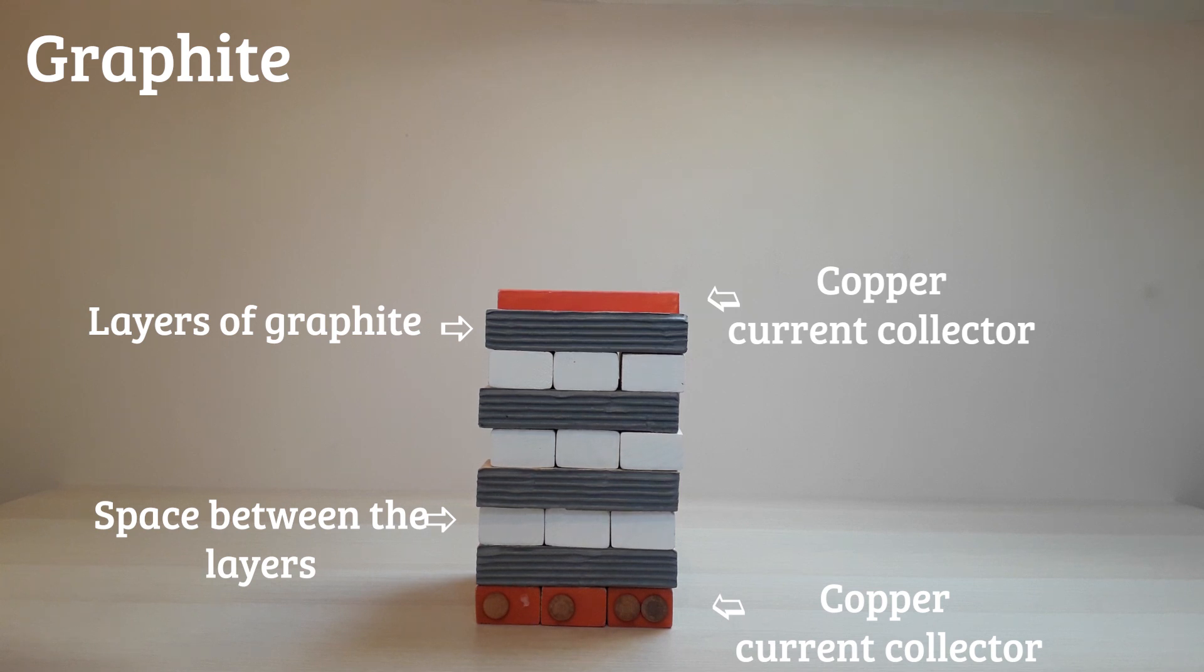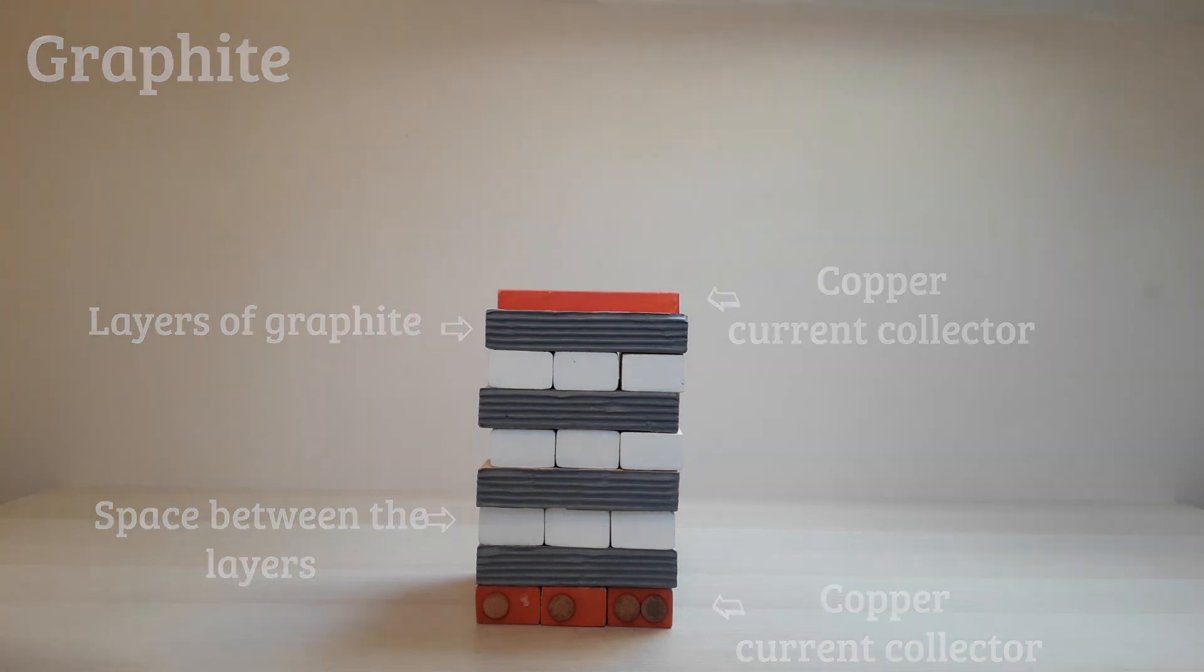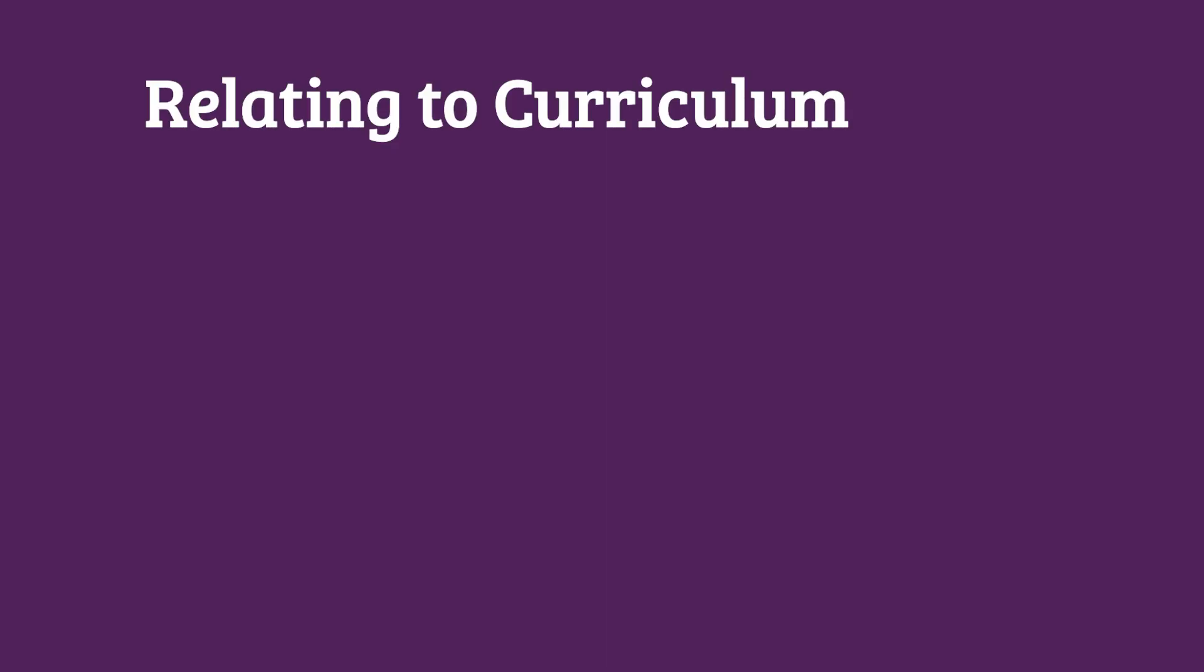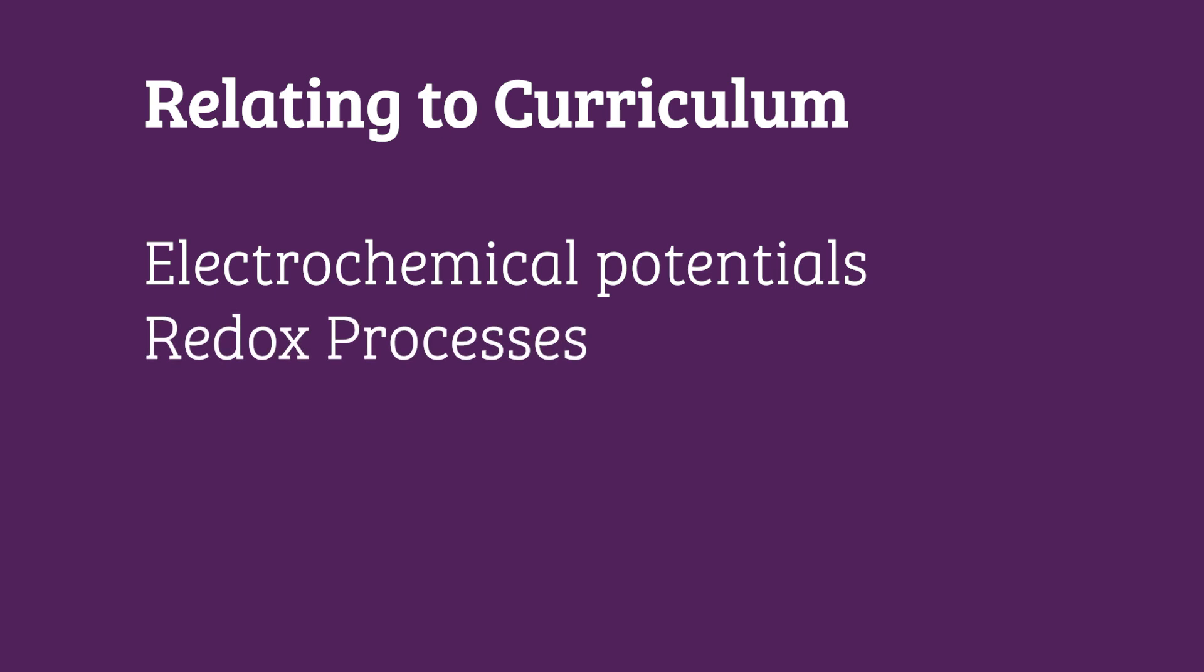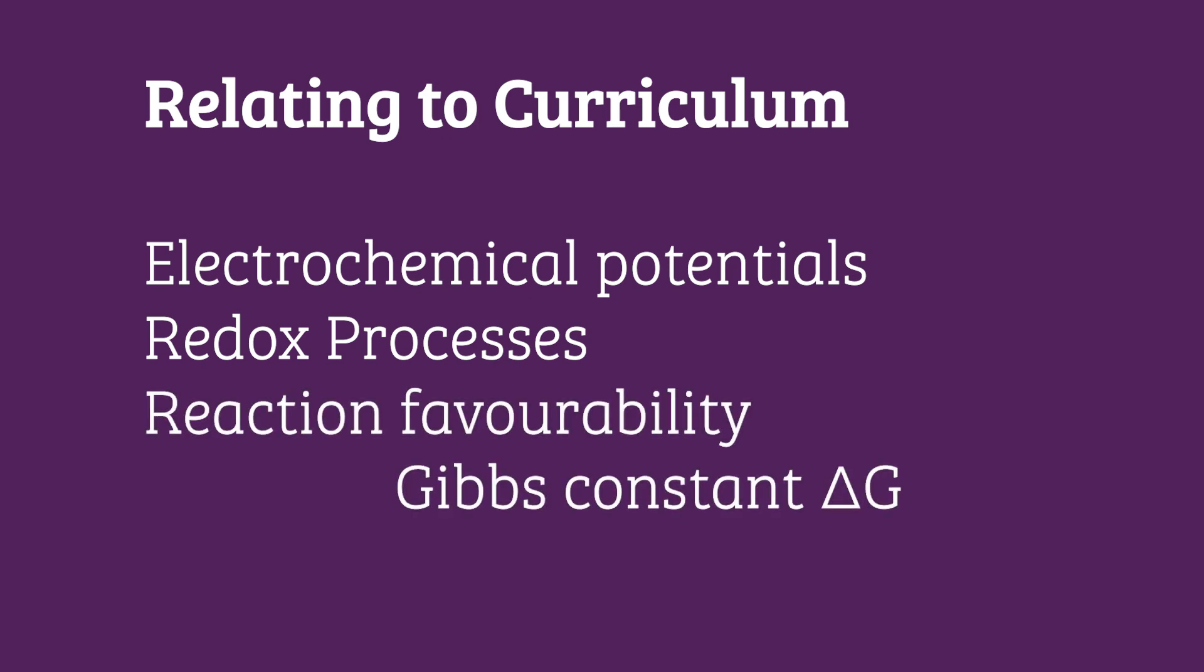An added note to consider but will not be represented in this video is the current collectors are used by the electrons which transfer by the external circuit. This application ties in nicely when teaching about electrochemical potentials and redox processes. You could get the class to think why these batteries work as they do and what is the favourable direction and where you have to supply energy.